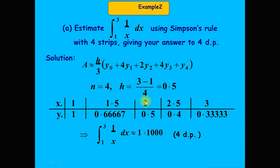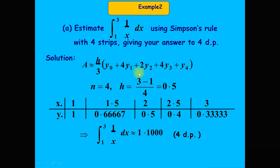Adding the step size to x = 2 gives x = 2.5, and substituting into 1/x gives y₃ = 0.4. Adding again gives the final value x = 3, and substituting gives y₄ = 0.33333. Putting all values y₀ through y₄ into Simpson's rule formula gives the result.